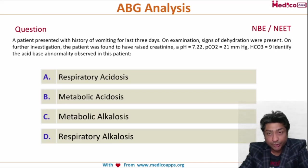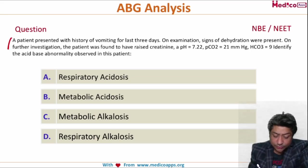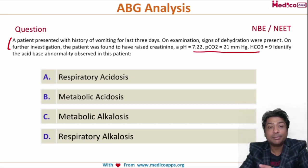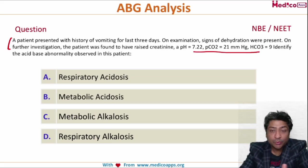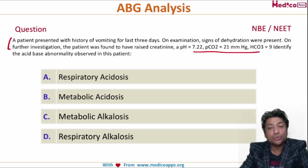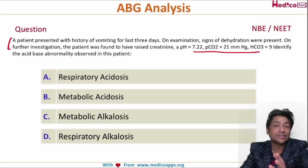Welcome to another MCQ discussion video. This question was asked in NEET PG around ABG — a clinical case was given with ABG values, and you are asked to comment on the acid-base abnormalities. ABG questions have been very frequently asked in PG entrance examinations and students find them very difficult. But I am going to give you a very simple algorithm, and if you use it you will be able to solve any ABG question in less than 15 to 20 seconds with 100% accuracy.